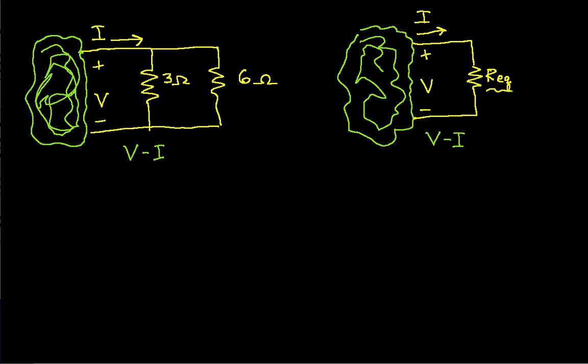What we'll do is we'll use this example of a 3 ohm resistor and a 6 ohm resistor in parallel to develop the concept and then we'll generalize it to two general resistors and then to more than two resistors.